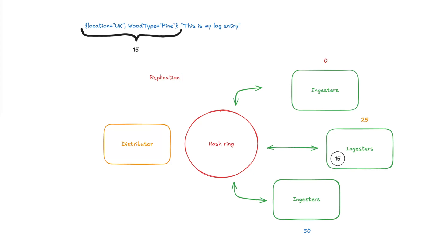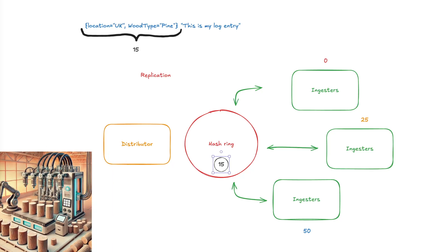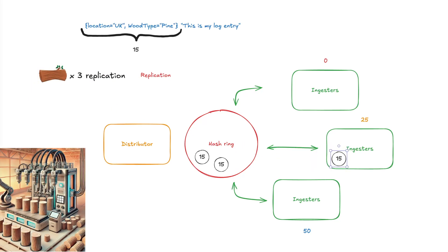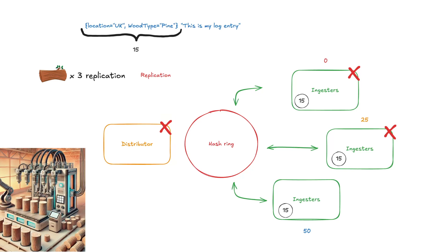Like most distributed databases, Loki supports replication. Distributors send the same log stream to multiple ingesters to mitigate data loss should one of the ingesters fail. Imagine our log processing plant has a cloning machine that replicates logs according to the replication factor. The hash circle rule applies to the first ingester, but then we move to the next highest available ingester based on the replication value. With a replication factor of 3, our log stream of 15 would go to ingester 25, then to 50, and then back to 0. Note that with replication, a quorum of successful writes is needed — a replication factor of 3 requires 2 out of 3 ingesters to process the log successfully, otherwise the write fails and an error is returned to the distributors.